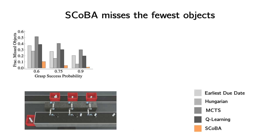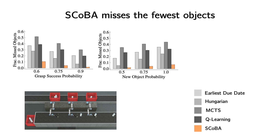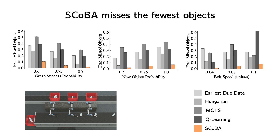On the conveyor belt domain, where our metric is the fraction of objects missed by all arms, we find that SCOBA outperforms all baselines — that is, misses fewer objects than the baselines do. The performance gap is consistent across three varying system parameters that all affect the problem difficulty in different ways.